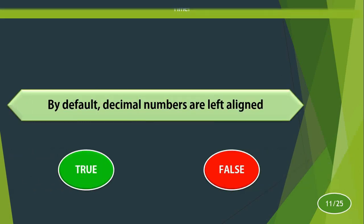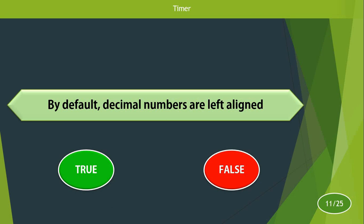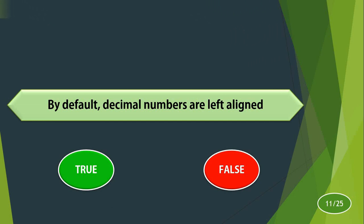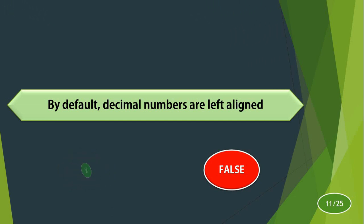By default, decimal numbers are left aligned. True or false? The answer is false. Numbers are always aligned to the right side of the cell.